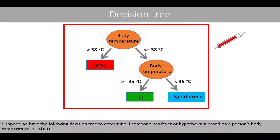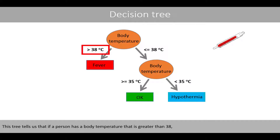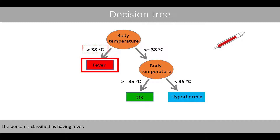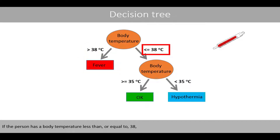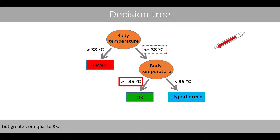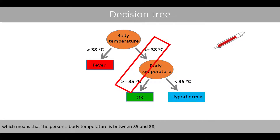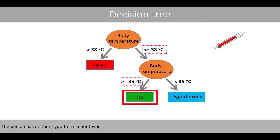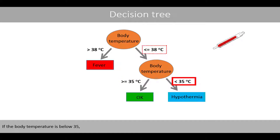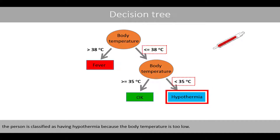Suppose that we have the following decision tree to determine if someone has fever or hypothermia based on the person's body temperature in Celsius. This tree tells us that if a person has a body temperature that is greater than 38, the person is classified as having fever. If the person has a body temperature that is less than or equal to 38 but greater or equal to 35, the person has neither hypothermia nor fever. If the body temperature is below 35, the person is classified as having hypothermia, because the body temperature is too low.